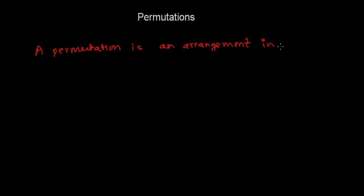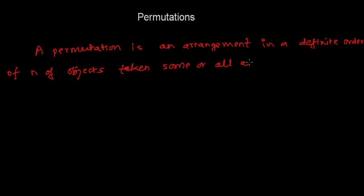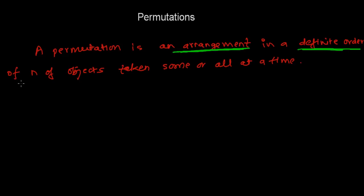So what is this permutation? It's nothing more than an arrangement. If you go to the definition, a permutation is an arrangement in a definite order of n number of objects taken some or all at a time.